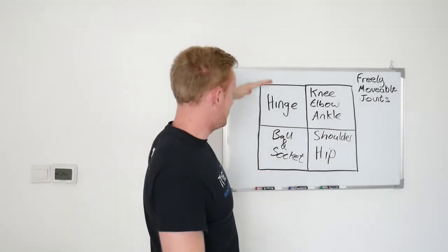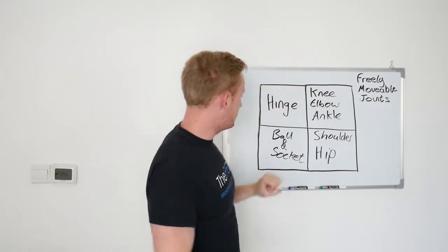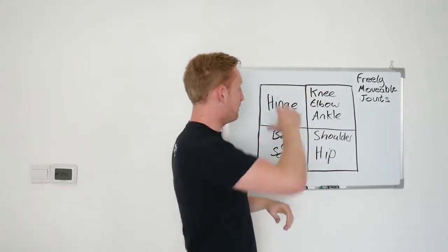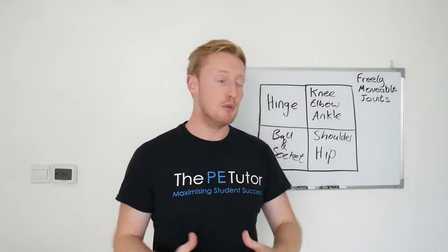Okay so we have hinge joints such as the knee, elbow or ankle, we've got the ball and socket joints, shoulder and hip, both of which are freely movable joints.